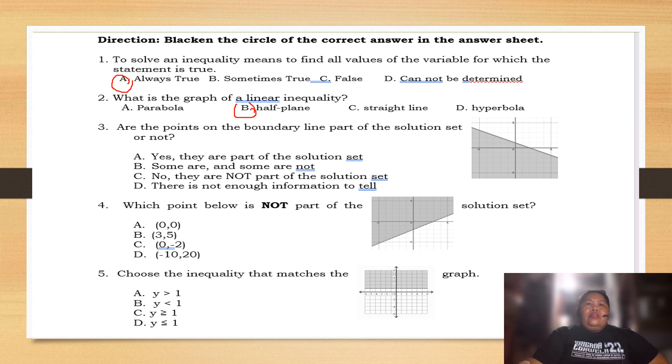Number three. Are the points on the boundary line part of the solution set? Yes or no? If you can see here, 0 and negative 2 is not part of the solution set. Why? It's all up. So, this means all the answers here is in the positive.